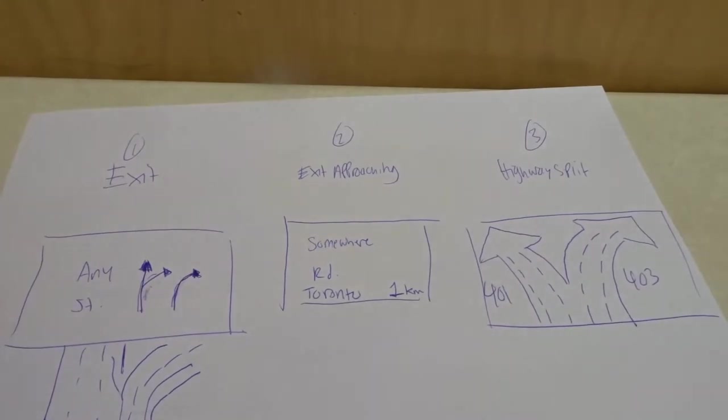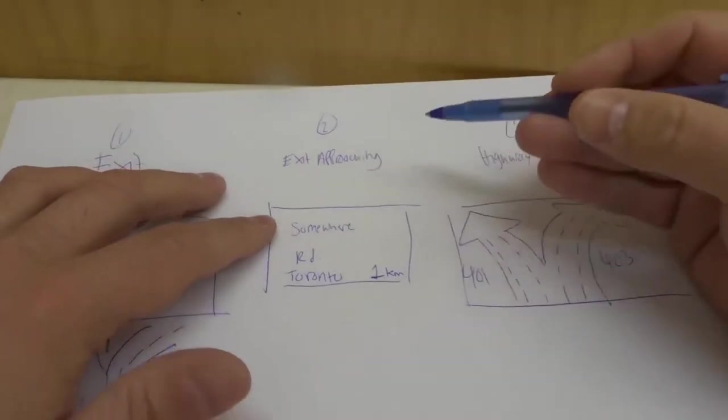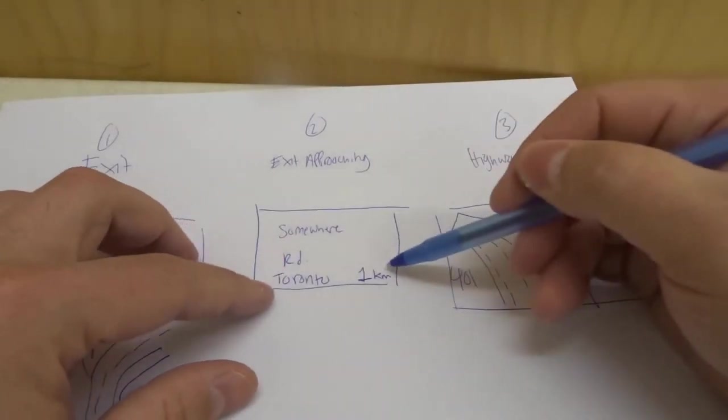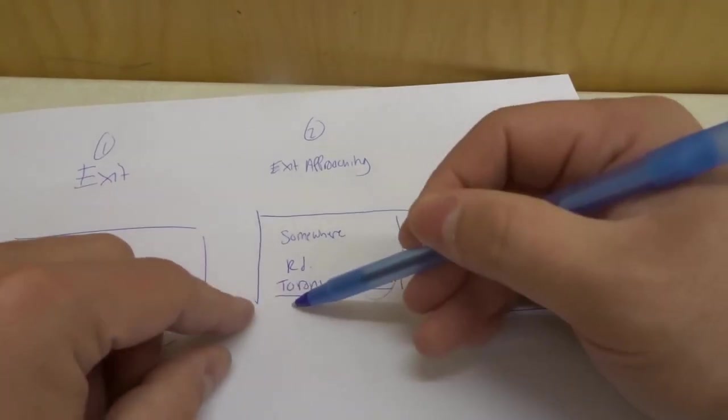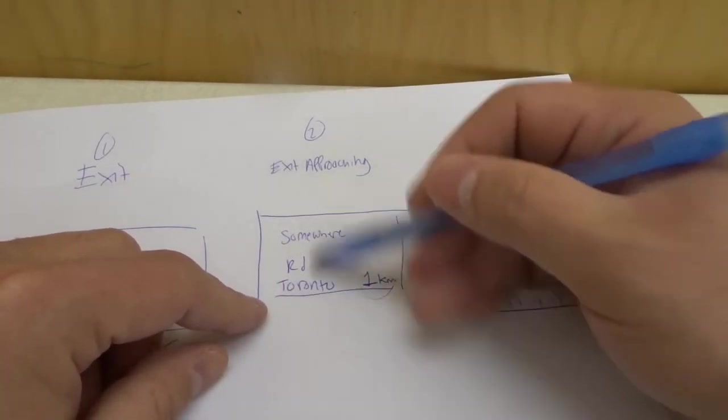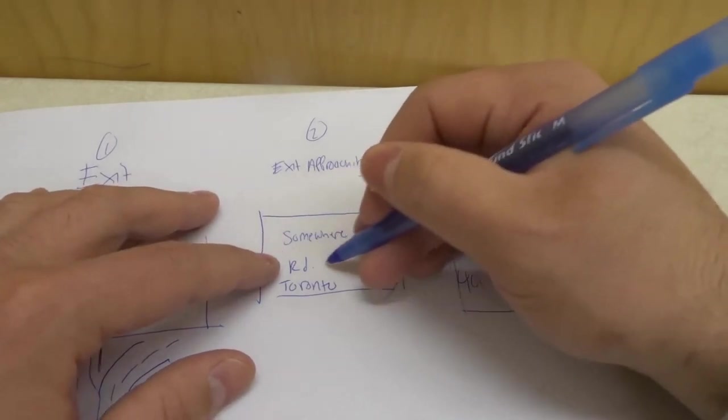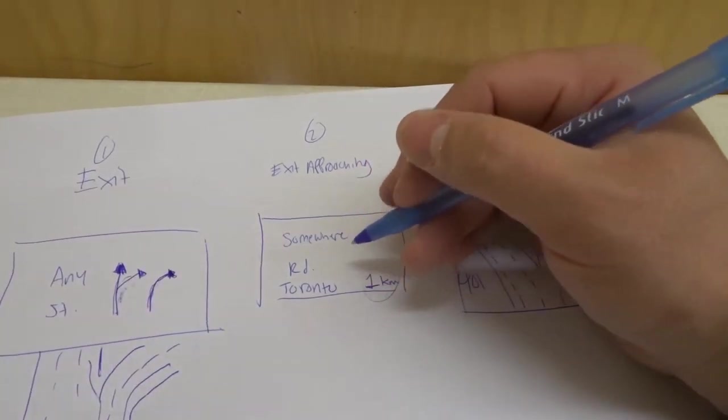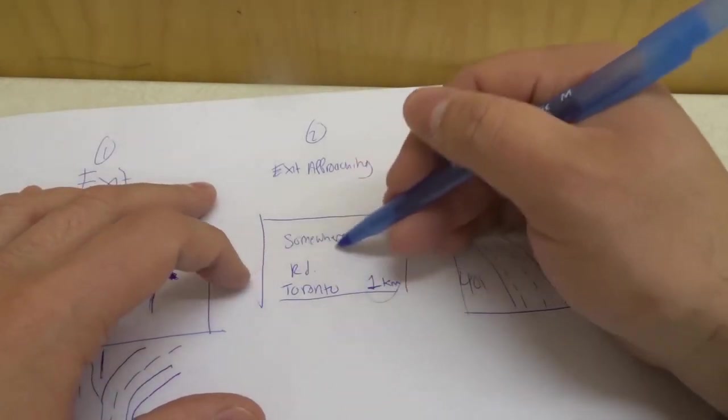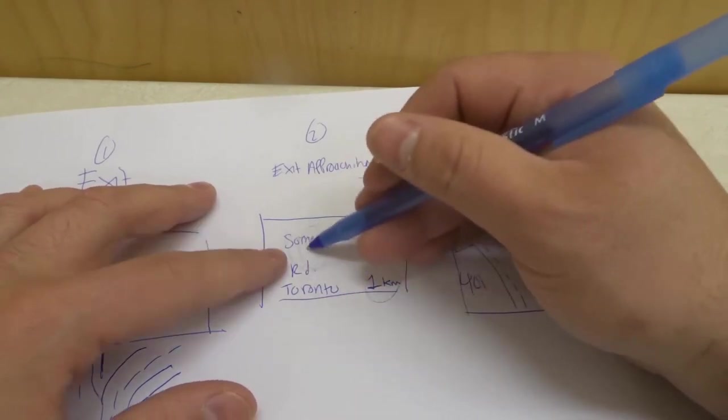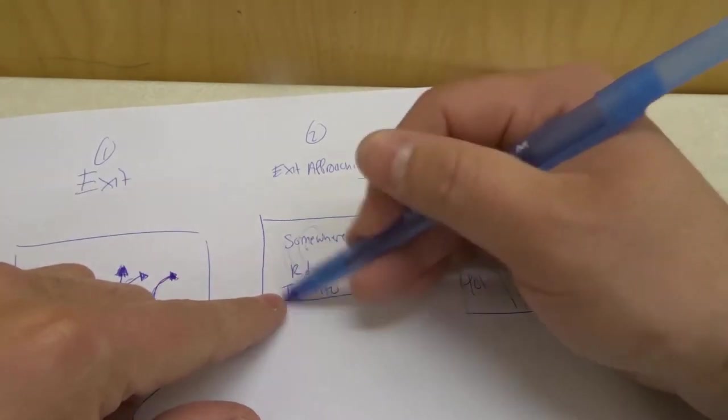The next one is the exit approaching sign which just tells you that the exit is approaching shortly. Now the sign can look like this or sometimes the distance can actually be underneath this. It can just be in a straight line. So this says somewhere road. Obviously I just made that name up too. But it's telling you what the road or the street name is that you're exiting on, where it's located. So in Toronto.